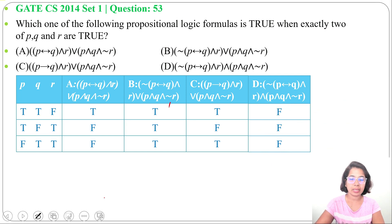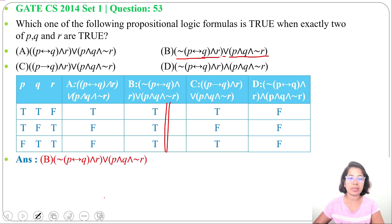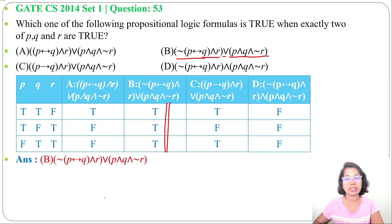So the answer is option B: negation of (P double implication Q) AND R, OR P AND Q AND negation of R. We just need to check the 3 possibilities where exactly 2 of P, Q, R are true. I've already discussed propositional logic — just go through the lecture, and if this lecture is helpful for you, please like, share and subscribe. Thank you.